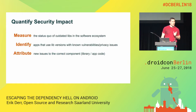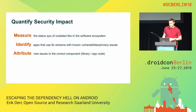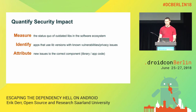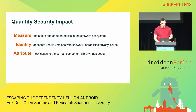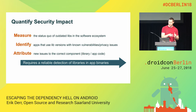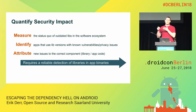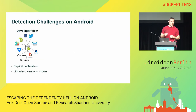These are only risk estimations. What we actually want to do is quantify the security impact of third-party code on applications. To do this we need to: first, measure the status quo of outdated libraries in ecosystems like Google Play; second, identify applications that use library versions with known security vulnerabilities or privacy issues; and third, attribute analysis results to the correct components — either application code or third-party code. All three tasks require a reliable way of detecting libraries, even down to specific versions in the compiled APK.